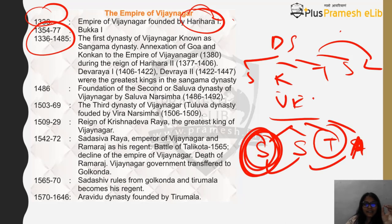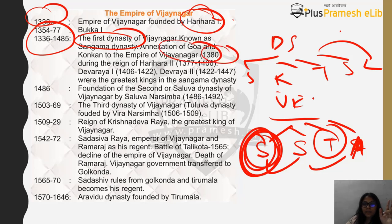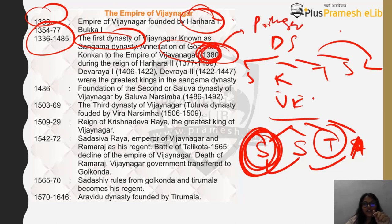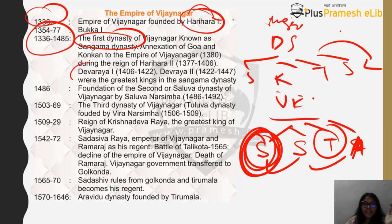The Sangama Dynasty is the first dynasty of Vijayanagara, and the annexation of Goa and Konkan to the Vijayanagara Empire happened in 1380 — much before the Portuguese invaded and captured Goa. Great kings of the Sangama Dynasty also include Devaraya I and Devaraya II.